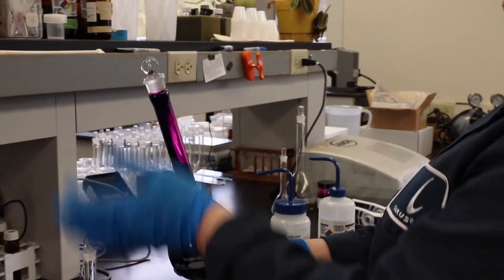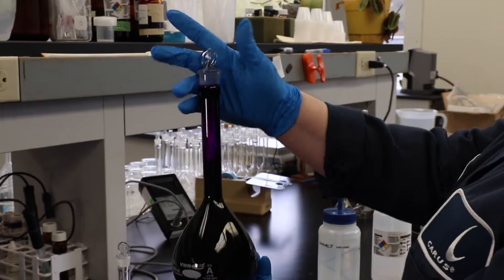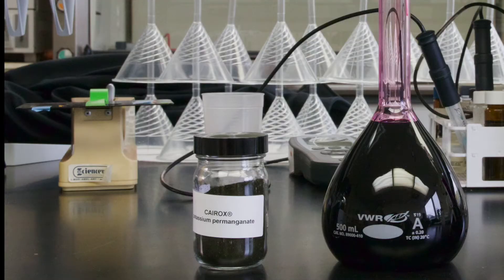Agitate the solution to ensure all the permanganate is dissolved. This will produce a 1% potassium permanganate solution.